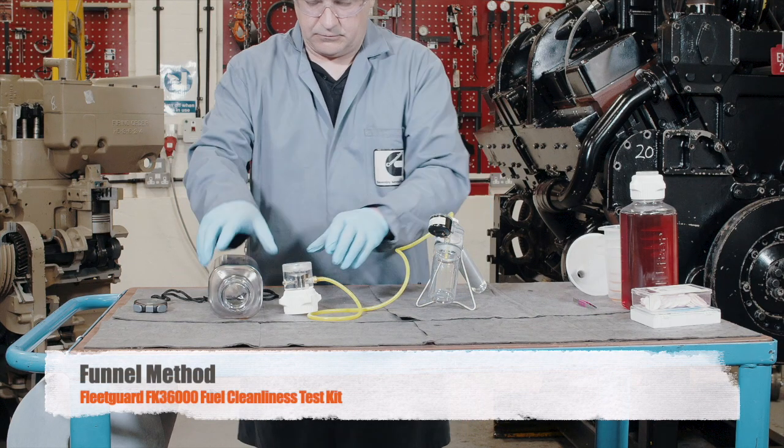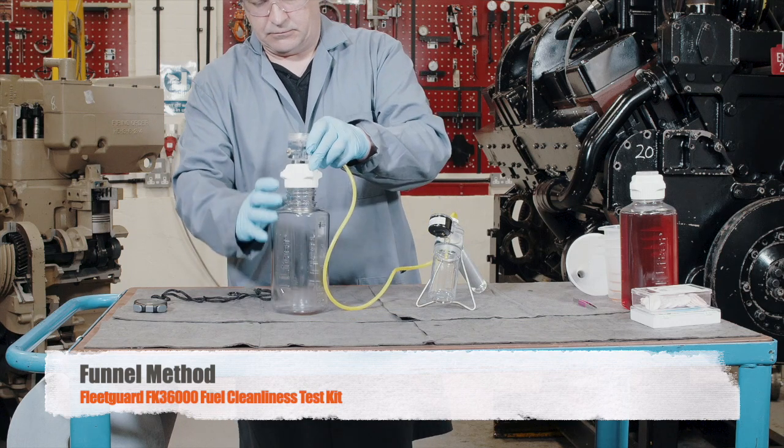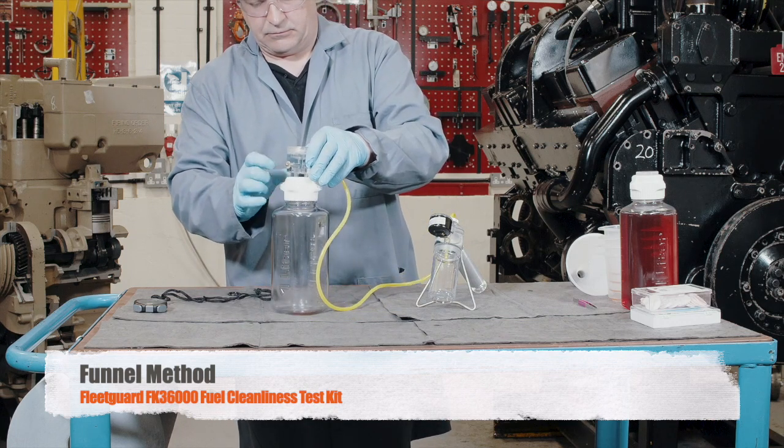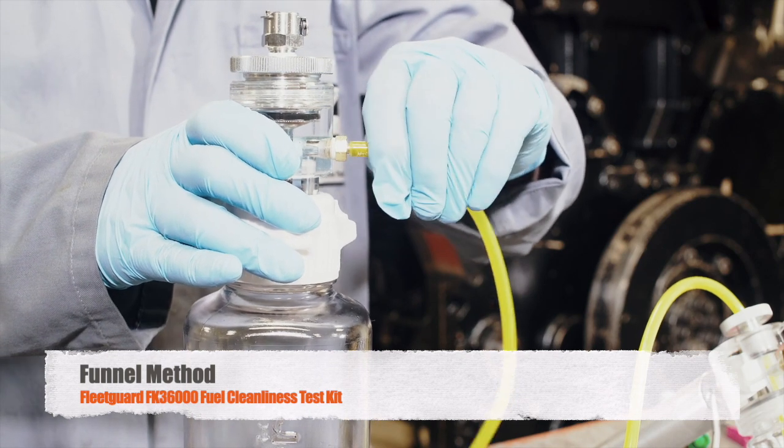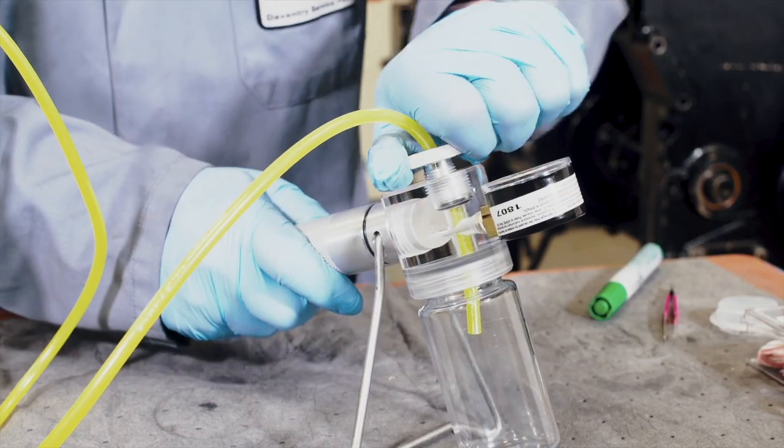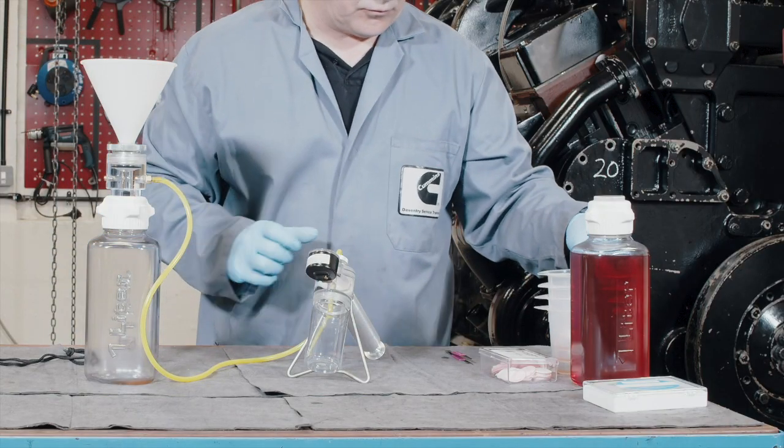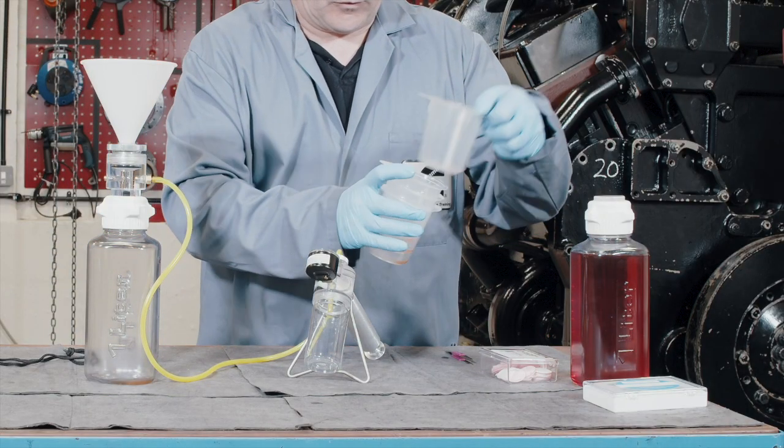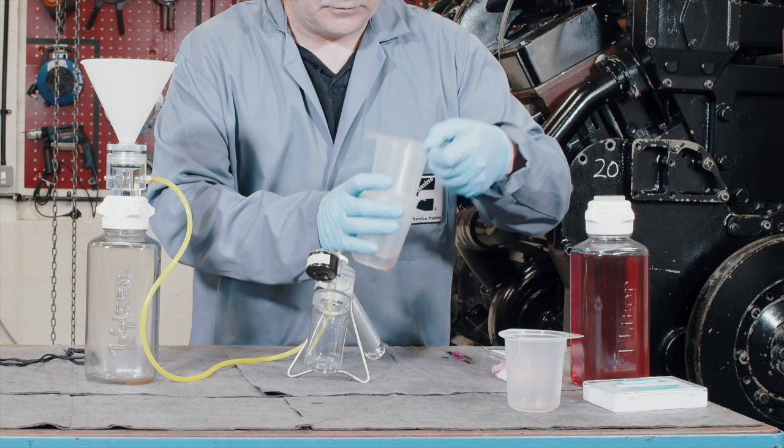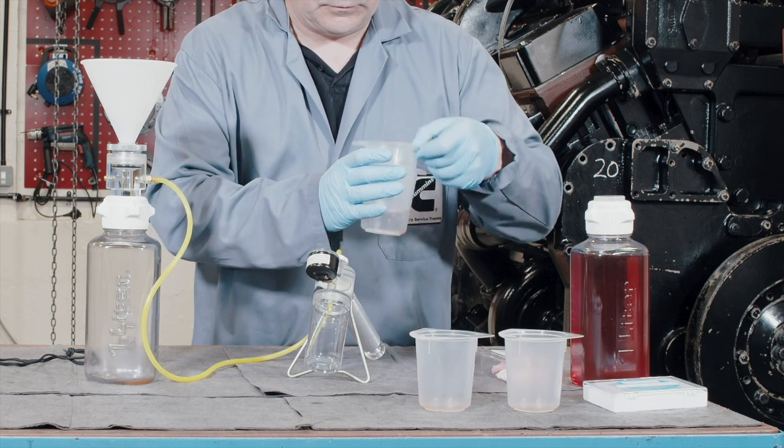Start by assembling the equipment in accordance with the instructions provided, ensuring that the vacuum hose is securely fitted to the vacuum adapter and that the aluminium collar on the vacuum pump is tight. The funnel test method measures the time of flow of four 250 millilitre samples of fuel through a selected filter media patch.